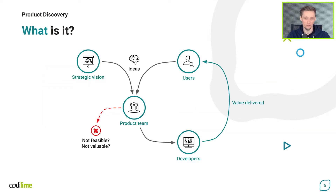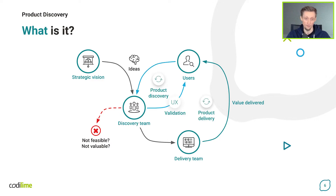The standard process for prioritizing what the delivery team works on looks like this: we have a strategic vision with lots of ideas, we pass it on to the product team that defines the backlog for the developers, the users get the product, and only then do we actually get the feedback and ideas. What if we invested more in researching and validating ideas upfront, before we even start the delivery? This extra pathway for validation of ideas is called product discovery.